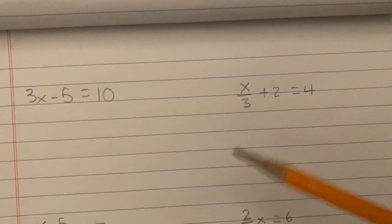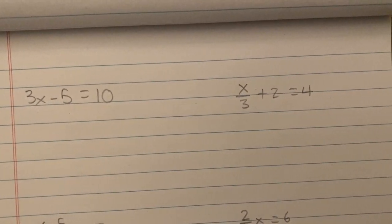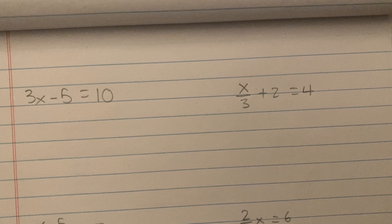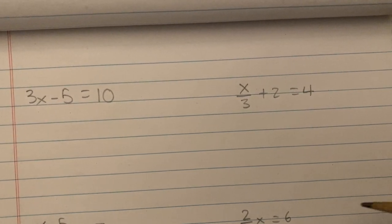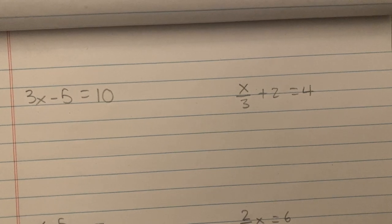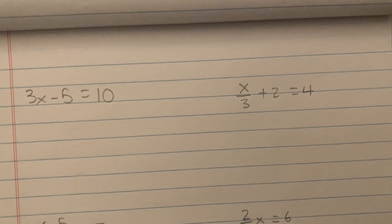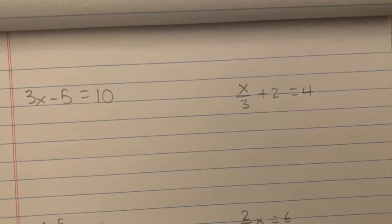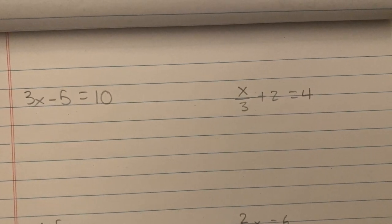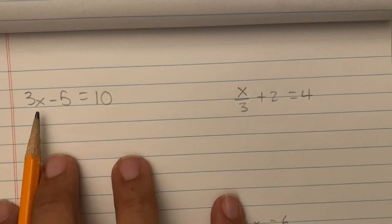We're working with two-step equations and multi-step equations. There are going to be two x's on the last two problems — one is going to be an example of x's on both sides, and the other one is going to be x's on the same side, so you can see the difference between the two. Let's get through some two-step equations.